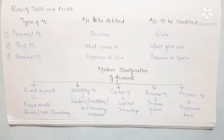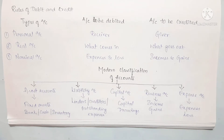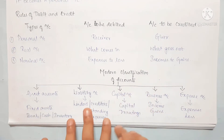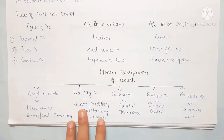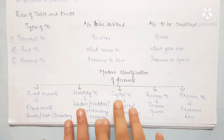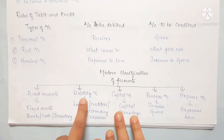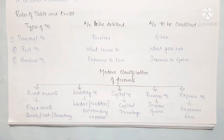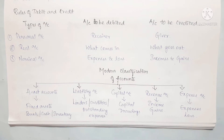If you want to continue, please subscribe to our channel and click the bell icon so you don't miss any other videos. Now, we will talk about modern classification of accounts. There are 5 categories of accounts: Assets, Liabilities, Capital, Revenue, and Expenses.